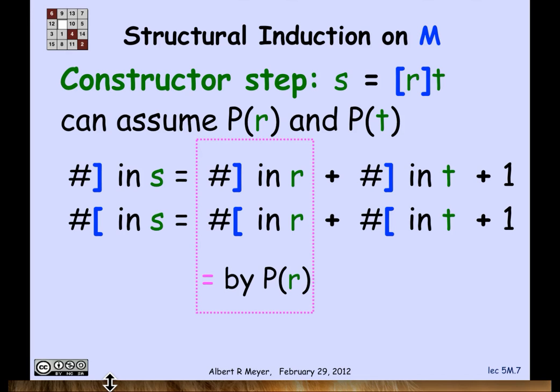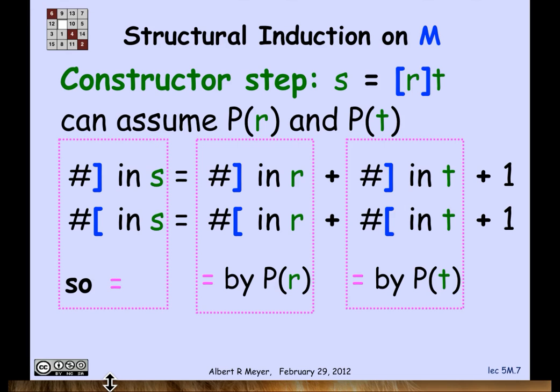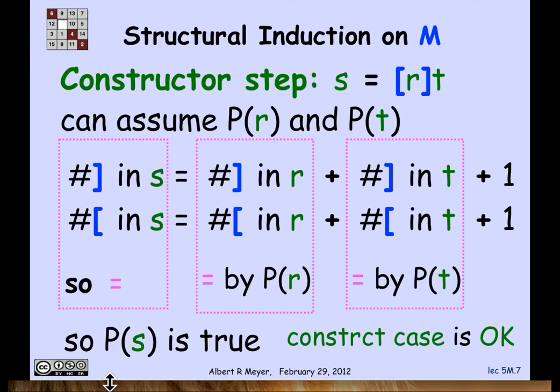the number of left brackets in s is the number in r plus those in t plus one. Because of hypothesis P(r), the number of right and left brackets in r are equal. By induction hypothesis P(t), the number of right and left brackets in t are equal. So the right-hand sides of both equations are equal, meaning the left-hand sides are equal. We've proved that the number of right and left brackets in s are the same. So P(s) is true and the constructor case is covered.